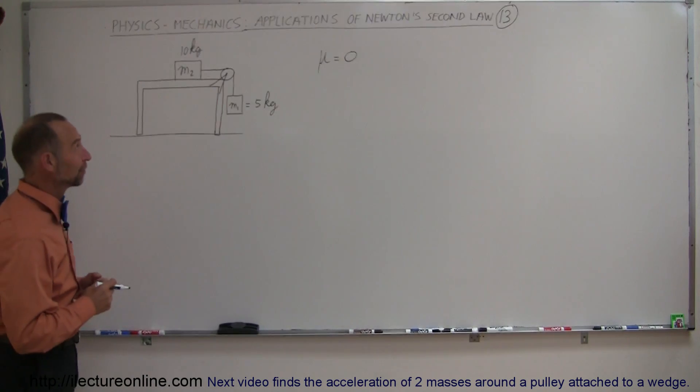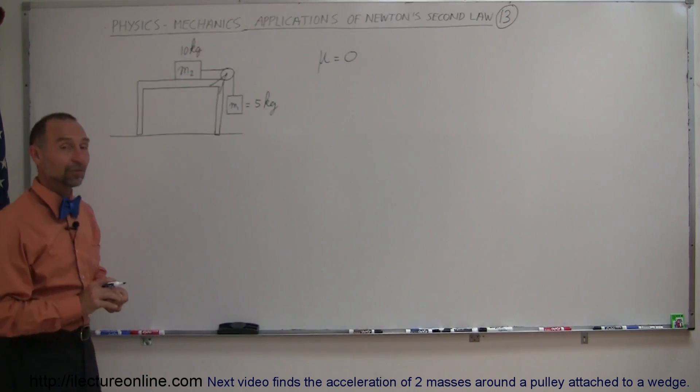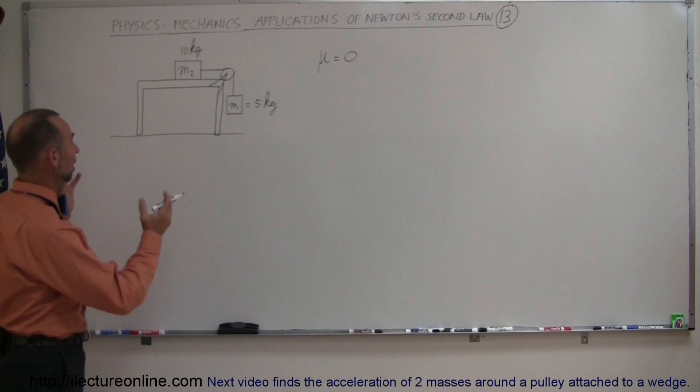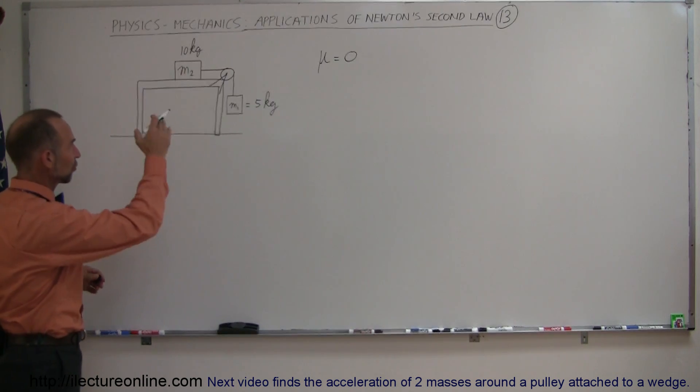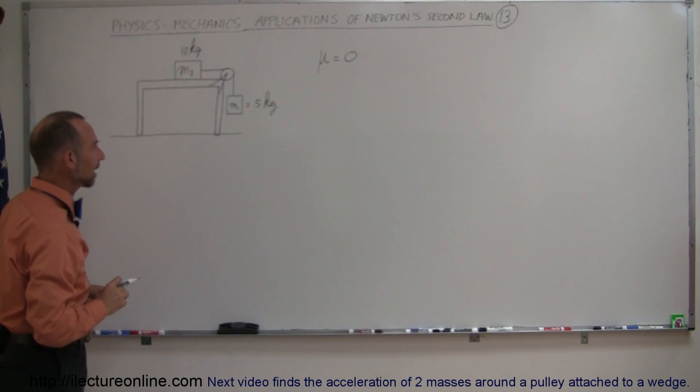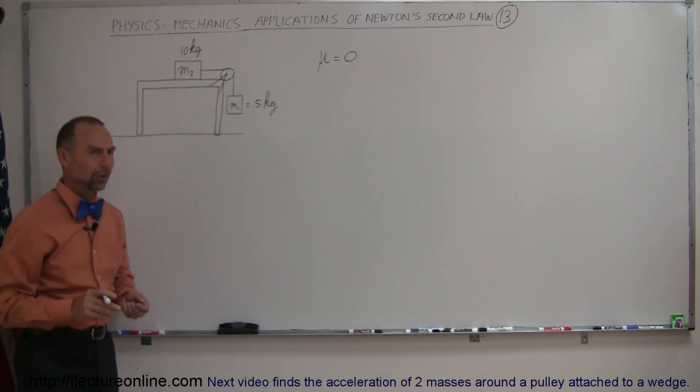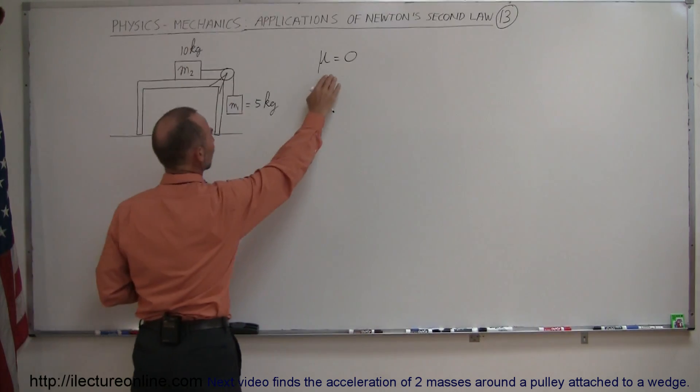And here's a very classic example of how to apply Newton's laws of motion. Here we have a table, a mass on top of the table, with a string across a pulley and a mass hanging down from that string, and of course in this case we have no friction.